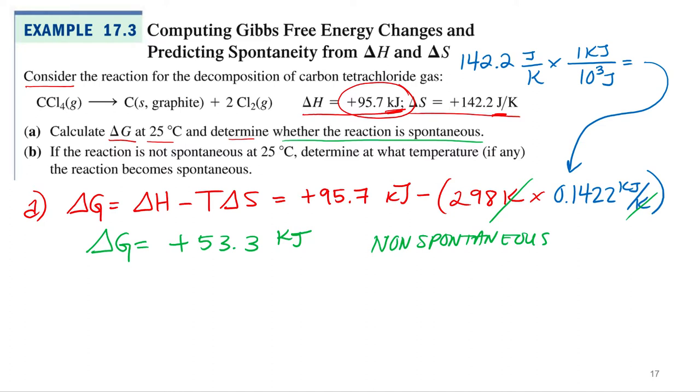Now that we know it's non-spontaneous, determine at what temperature, if any, the reaction becomes spontaneous. And here's where we can calculate what temperature it becomes spontaneous. Now, how are we going to do this? Well, if it's positive, it's non-spontaneous. If it's negative, it's spontaneous, right? So what happens in the middle? It equals zero.